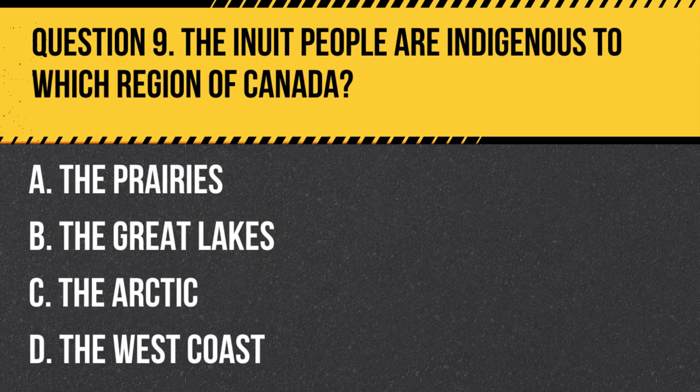Question 9. The Inuit people are indigenous to which region of Canada? A. The Prairies. B. The Great Lakes. C. The Arctic. D. The West Coast.